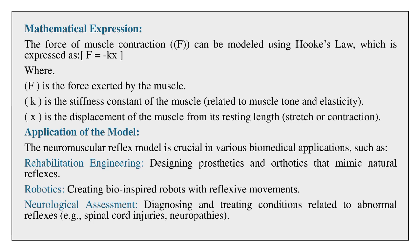The force of muscle contraction can be modeled using Hooke's Law, expressed as F = KX, where F is the force exerted by the muscle, K is the stiffness constant of the muscle related to muscle tone and elasticity, and X is the displacement of the muscle from its resting length (stretch or contraction).